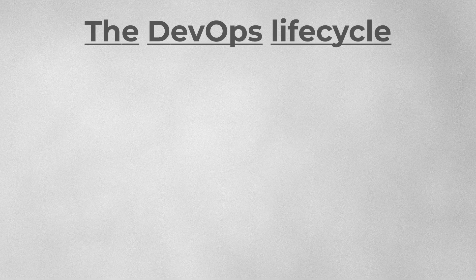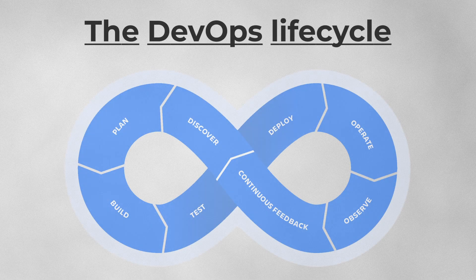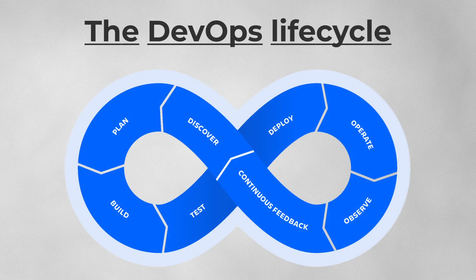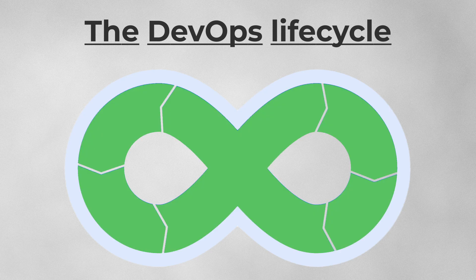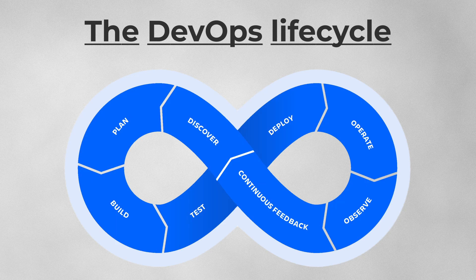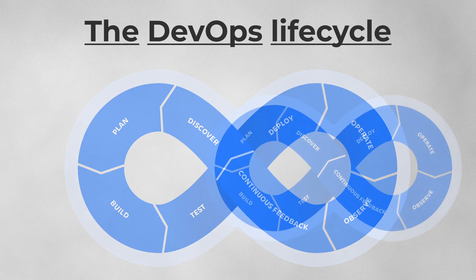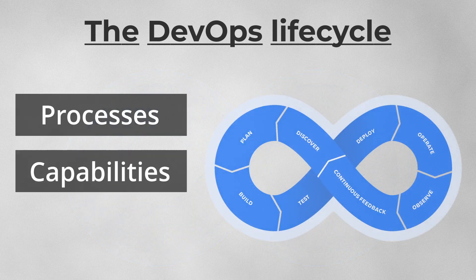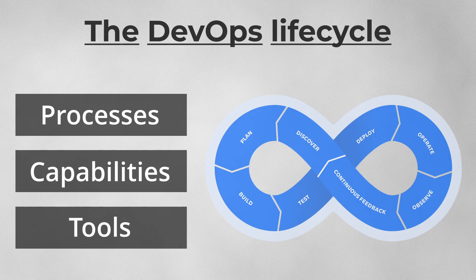Now let's understand the DevOps lifecycle. Because of the continuous nature of DevOps, practitioners use the infinity loop to show how the phases of the DevOps lifecycle relate to each other. The DevOps lifecycle consists of eight phases representing the processes, capabilities, and tools needed for development.